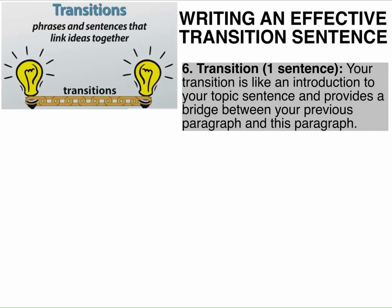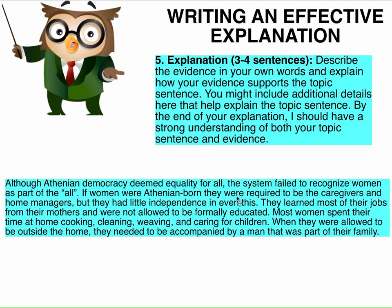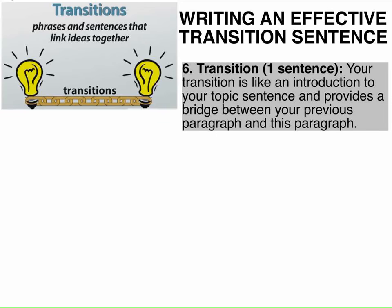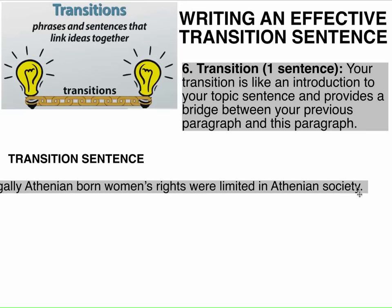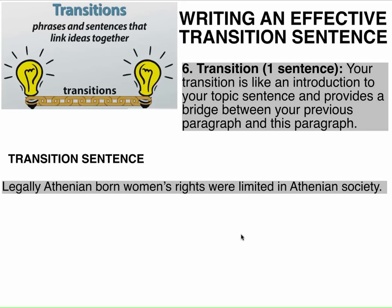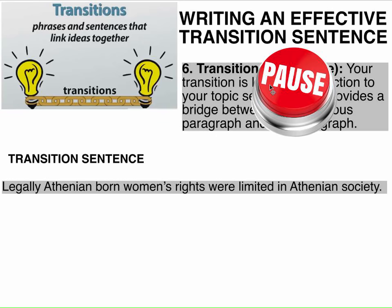Now I'm going to write a transition. This transition needs to move me from the end of this explanation — 'when they were allowed to be outside the home, they needed to be accompanied by a man that was part of their family' — into the next piece of evidence. This is what I say: 'Legally, Athenian-born women's rights were limited in Athenian society.' I transition from talking about women being held in the household to how they didn't have rights outside their home in government. Pause and write your transition sentence, thinking about that next piece of evidence and how you can connect the two ideas.